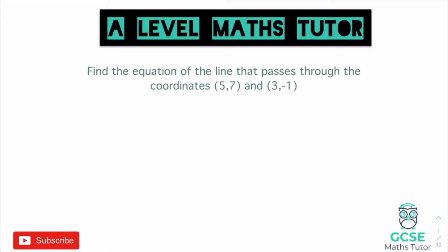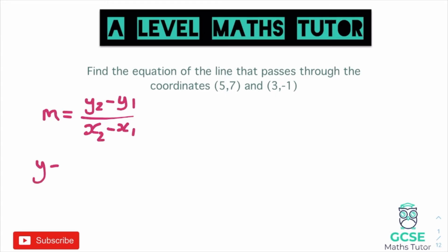This question says: find the equation of the line that passes through the coordinates (5, 7) and (3, −1). When finding equations of straight lines there are two formulas we need. One is to find the gradient: m equals y₂ minus y₁ over x₂ minus x₁. The second is our equation of a line: y minus y₁ equals m(x minus x₁). We'll use (5, 7) as our first coordinate and (3, −1) as our second.